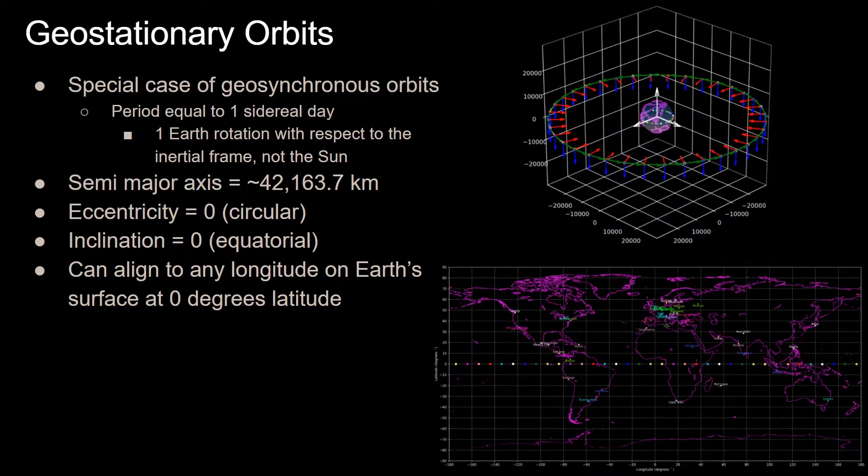In that video, I also go over that from this period, we know that these orbits will have a semi-major axis equal to roughly 42,163.7 kilometers.